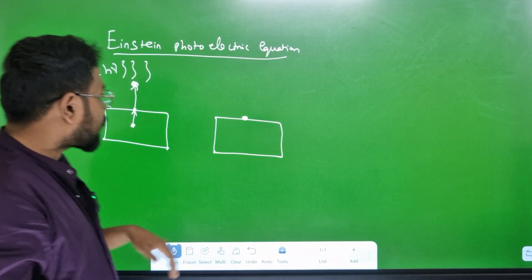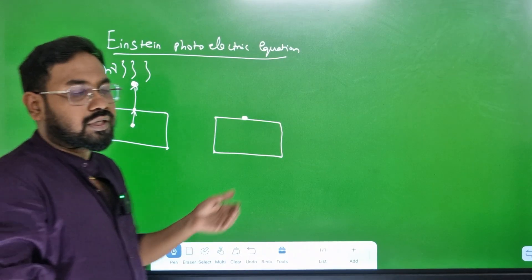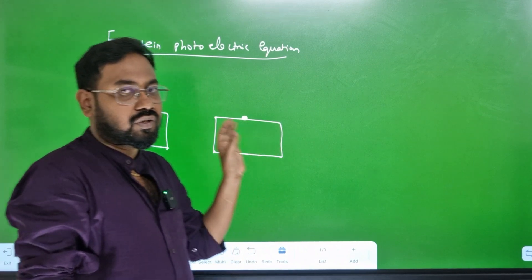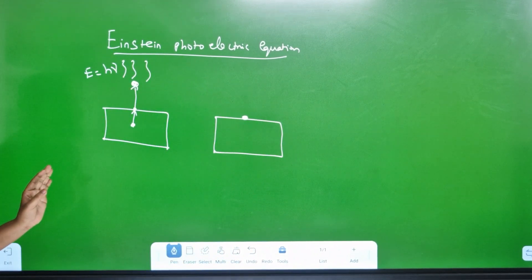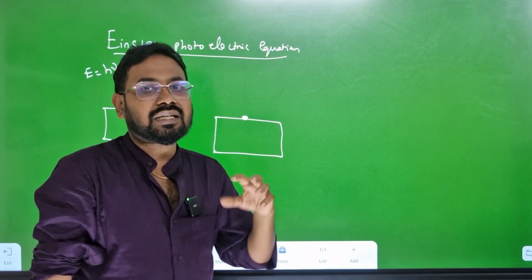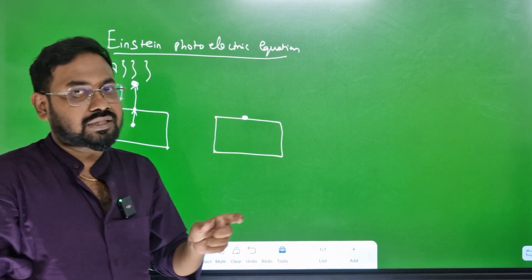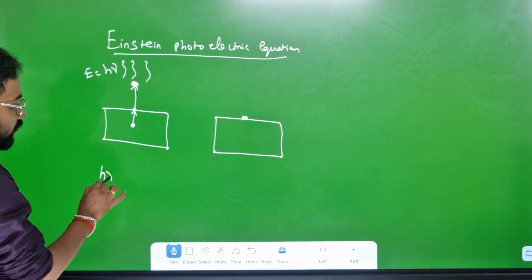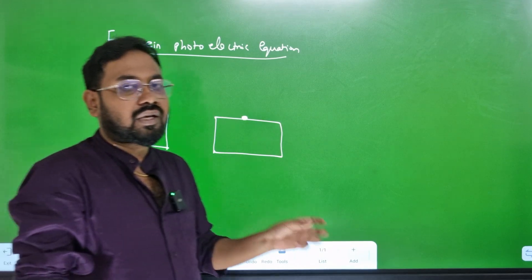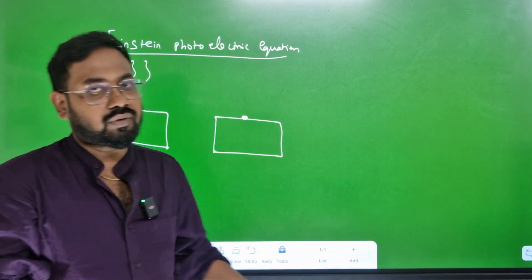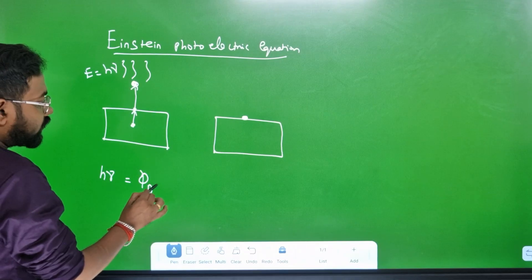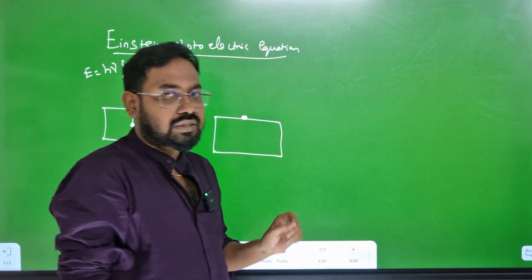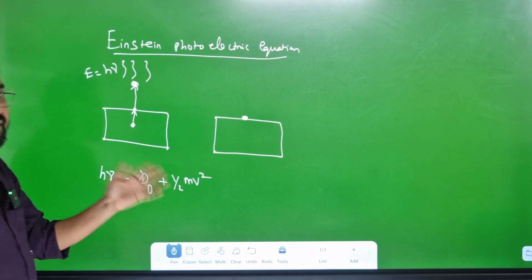Let us consider the electron. E is equal to h-nu — the energy of the photon incident on the metal surface. It is absorbed by a single electron, and then the electron is ejected. There are two parts: one is h-nu of the photon, one energy is to overcome the potential barrier — that is the work function — and the remaining part of energy is the kinetic energy.